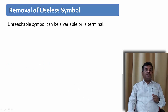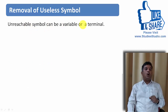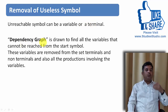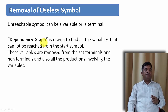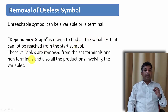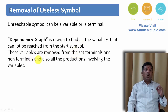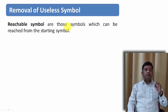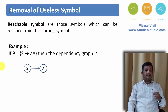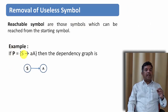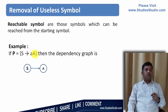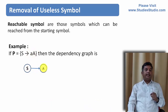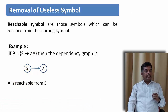Now let us see what an unreachable symbol is. An unreachable symbol can be a variable or a terminal. We use a dependency graph to identify non-reachable symbols. A dependency graph is drawn for all variables that cannot be reached from the starting symbol; these variables are removed from the set of terminals and non-terminals, along with all productions involving them. Reachable symbols are those which can be reached from the starting state.